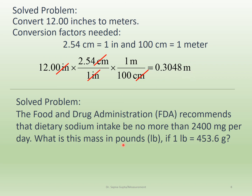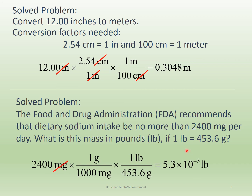The FDA recommends dietary sodium intake of no more than 2400 milligrams per day. What is this mass in pounds, given that 1 pound equals 453.6 grams? Before converting to pounds, we need to convert milligrams to grams first. Our strategy is: milligrams → grams → pounds. We've memorized that 1 gram equals 1000 milligrams, and the pound-to-gram conversion is given.